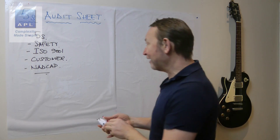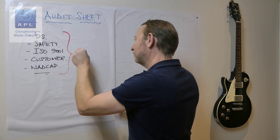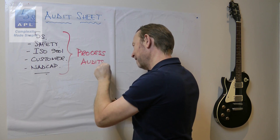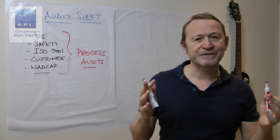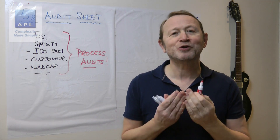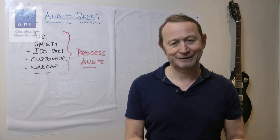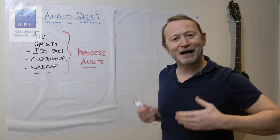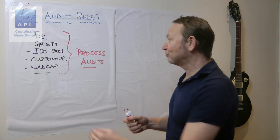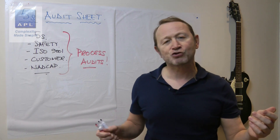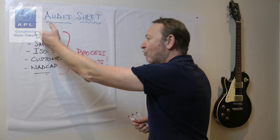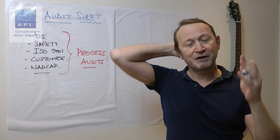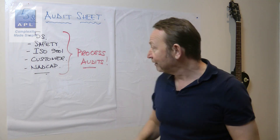Can we stop the audit madness please? They are all process audits. Therefore, there is only one audit and it's a process audit — that's it. Please just have a process audit and call it a process audit. If you want to put a special line in for safety, that would be a great thing to do, but really all of these are process audits. They're supposed to be making sure that your process is under control.